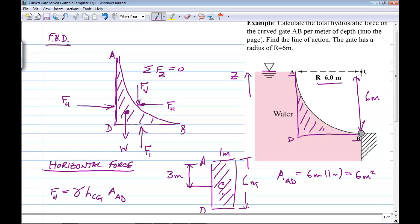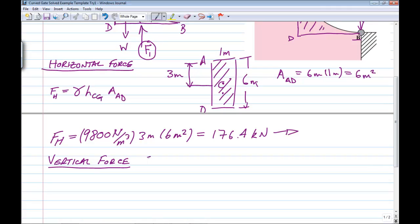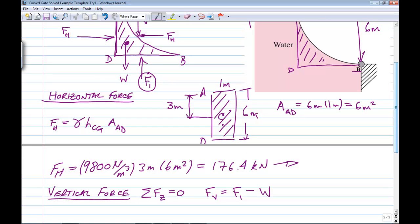So FV here has to balance the hydrostatic force on surface BD, as well as the weight. So from the summation of forces in the z direction equals zero, we get that FV equals F1 minus W, where F1 is the hydrostatic force on this surface BD.